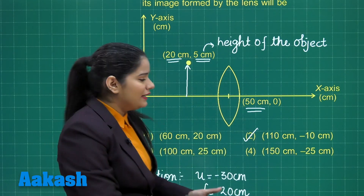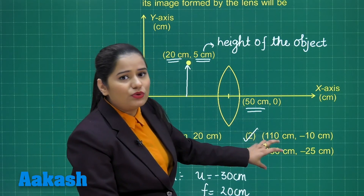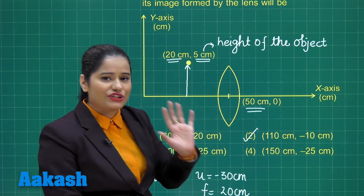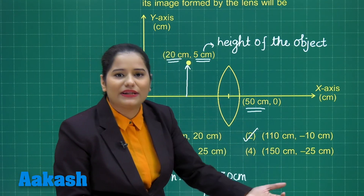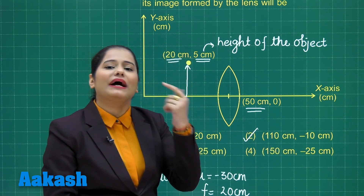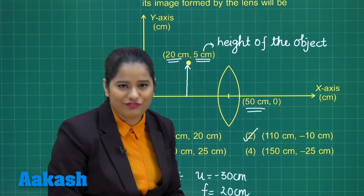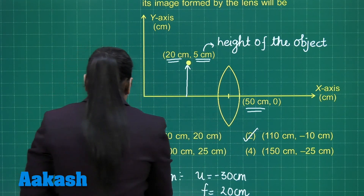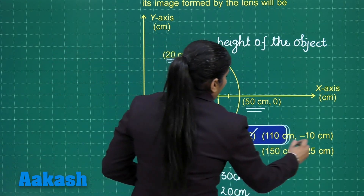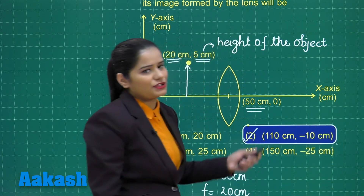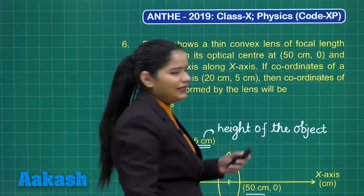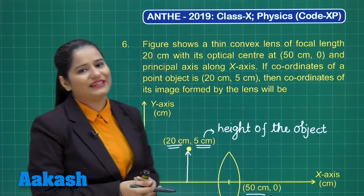Only option 2 has X = 110, so that is the correct option. There is no need to calculate the Y-coordinate since the X-coordinate already uniquely identifies the correct option. If needed, the Y-coordinate could be found using the magnification formula. This is the correct option for this question.